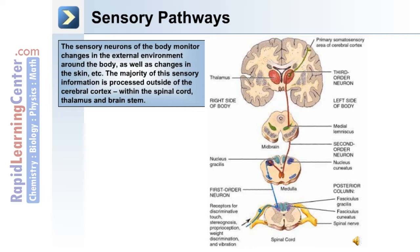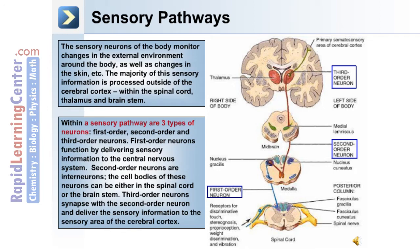Within a sensory pathway there are three types of neurons: first-order, second-order, and third-order neurons. First-order neurons function by delivering sensory information to the interneurons. The cell bodies of these neurons can be either in the spinal cord or in the brainstem. Third-order neurons synapse with the second-order neuron and deliver the sensory information to the sensory area of the cerebral cortex.